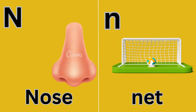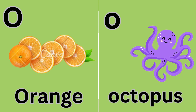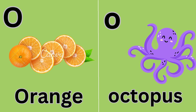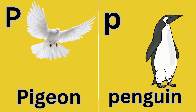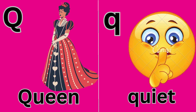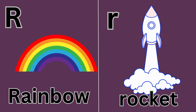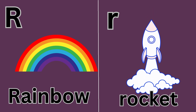N for Nose. N for Nitter. O for Orange. O for Octopus. R for Rocket.